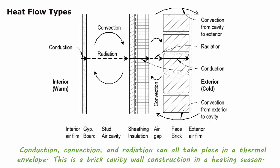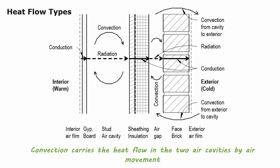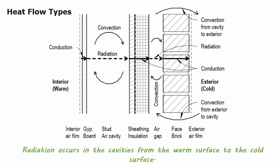Conduction, convection, and radiation can all take place in a thermal envelope. This is a brick cavity wall construction in a heating season. Heat flows by conduction through the solid materials — gypsum board, sheathing, rigid insulation, and face brick. Convection carries the heat flow in the two air cavities by air movement. Radiation occurs in the cavities from the warm surface to the cold surface.